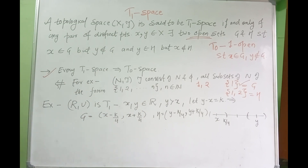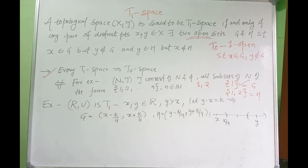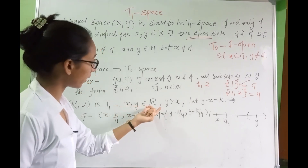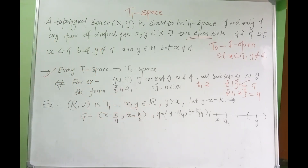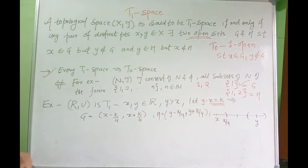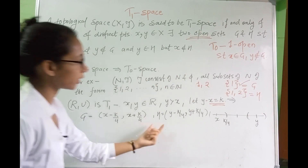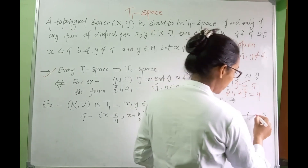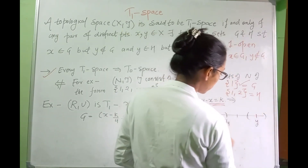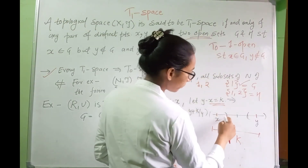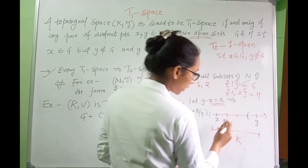Now let's take an example of a T1 space. The usual topology on R is T1. If you take two distinct points X and Y from R, assume Y is greater than X, and let K be the difference between them. Divide K by 4 to get intervals.